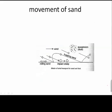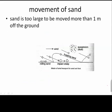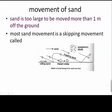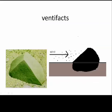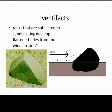Movement of sand. Sand can't be moved more than a meter off the ground, so it moves by a skipping movement called saltation — it hops along, and as it hops a few inches it lands, dislodging another grain which moves a few more inches. Silt and clay, however, can be suspended as dust and go high into the atmosphere. If sand hits a rock with enough force, the rock is sandblasted, and the sand erodes the rock into a ventifact — flat sides as the result of sand erosion.